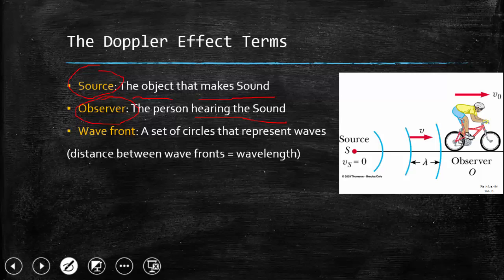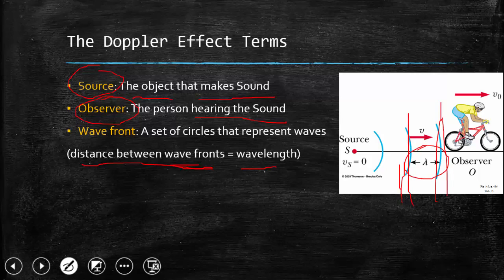And wavefront is a set of circles that represent waves. The key concept is that the distance between wavefronts is the wavelength. So if you see here, one wavefront is this, another is this, and the distance between these two wavefronts is the wavelength lambda.